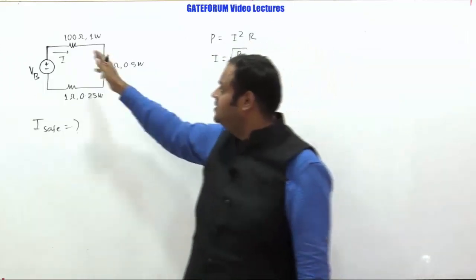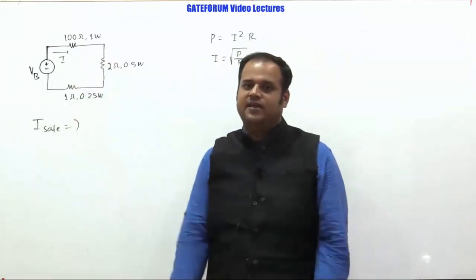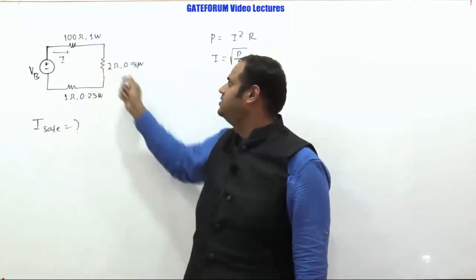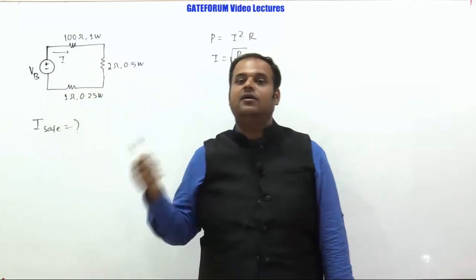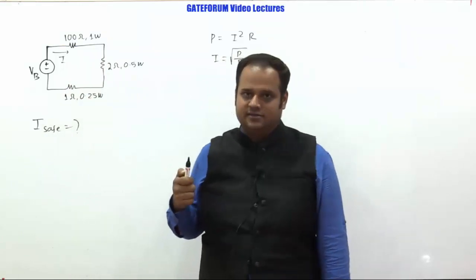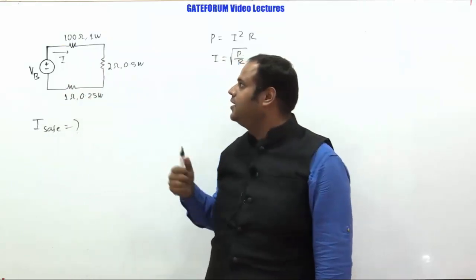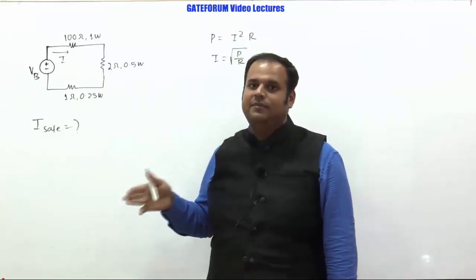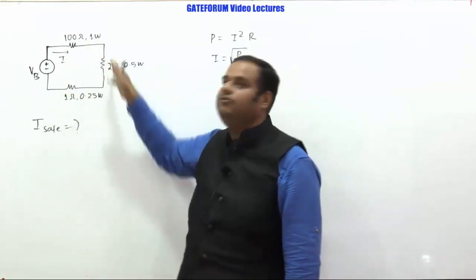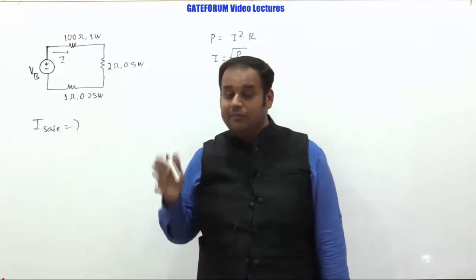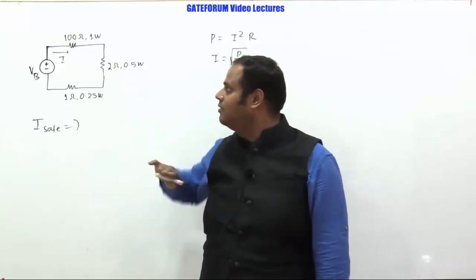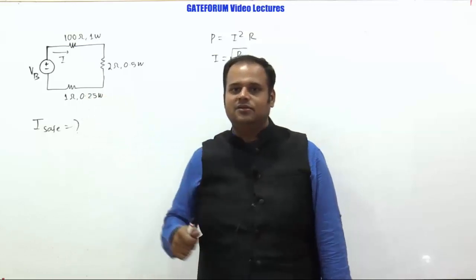When these resistors are connected separately in different circuits, this can support up to this much power. But once we are connecting them in series, we cannot have different value of currents, right. So in that case, if we get many answers, we have to select the minimum answer, because in the series path current will be same. If you take the minimum one, it will make sure it is not driving any of the resistances into the electrical breakdown.